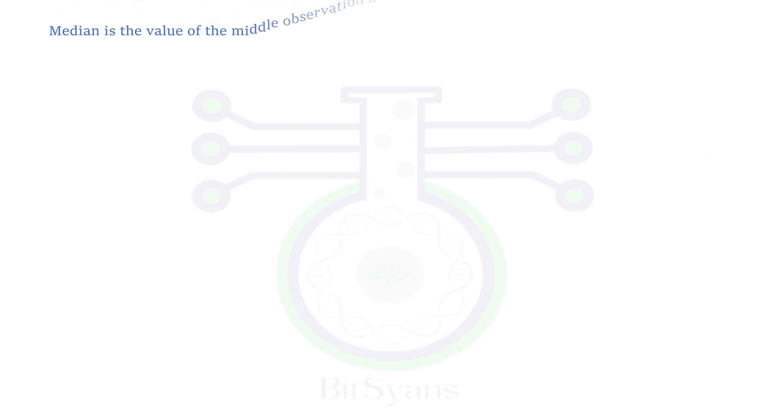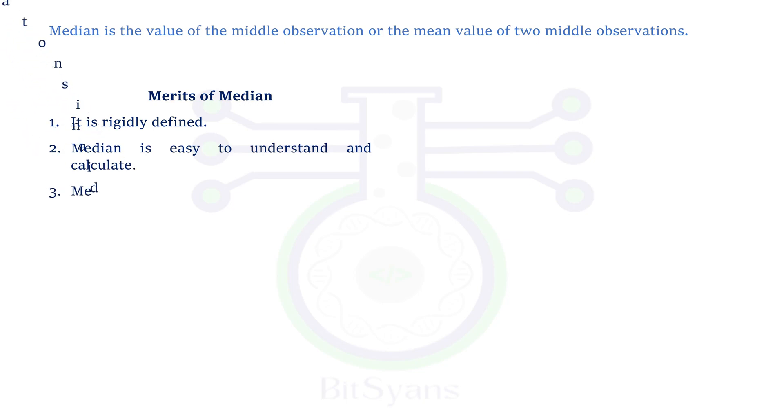Coming to median. Median is the value of the middle observation or the mean value of two middle observations. If we see median, there are merits and demerits of the median. Let's start with the merits of median.